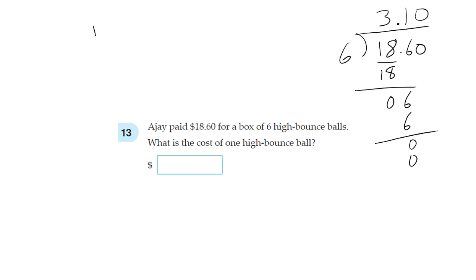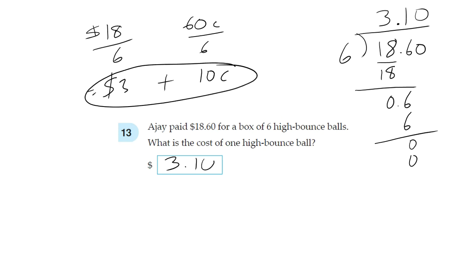Or a simpler way to do it: with $18 here and 60 cents here. So $18 divided by 6 gives you $3, and 60 cents divided by 6 gives you 10 cents. So add them together and get your answer: $3.10.